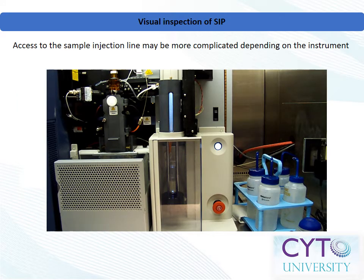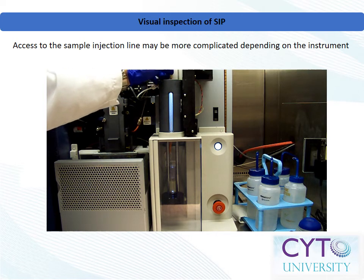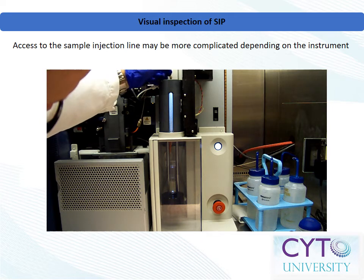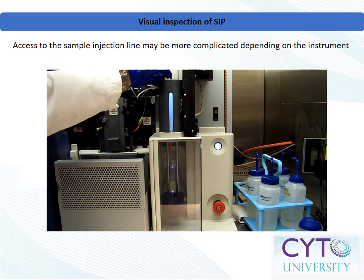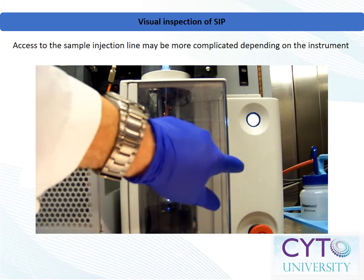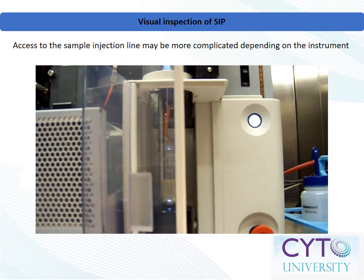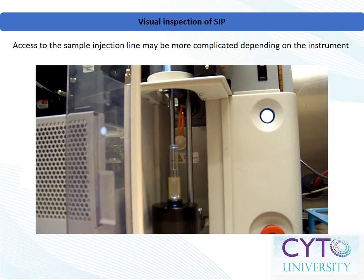On certain systems, the sample injection tube is enclosed within a bulk injection chamber. The sample injection tube can be accessed and cleaned using the change sample filter command within the software. When prompted, drop the sample line below the lower edge of the bulk injection chamber in order to gain access. Once the sample line is below the lower edge of the bulk injection chamber, it can be cleaned as needed.